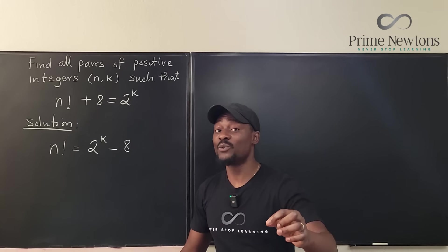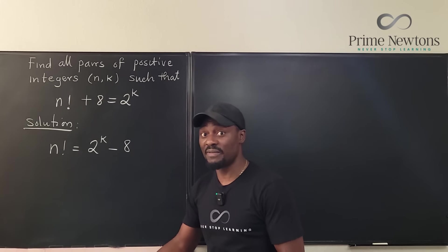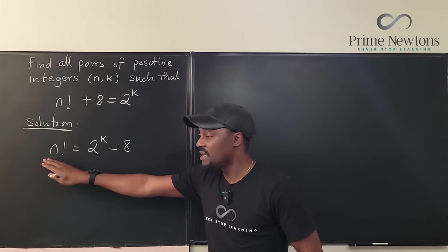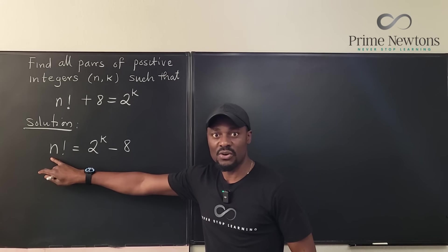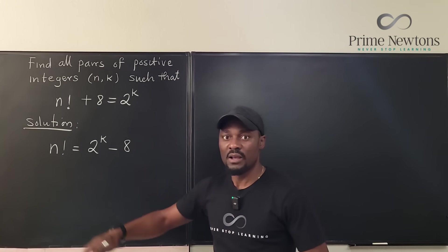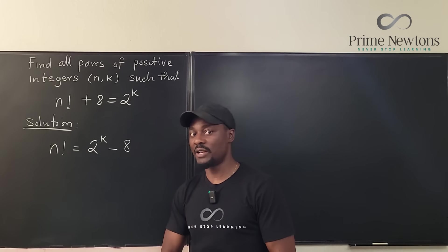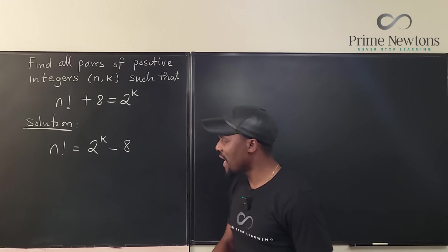Not every factorial, except for zero factorial and one factorial. Every other factorial you compute will be even if this is a positive integer, because two is the next number. Two times anything is even, so I know that I can play with the number two a lot.